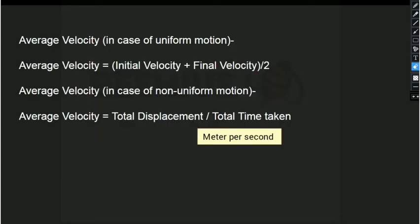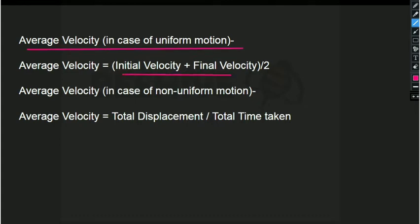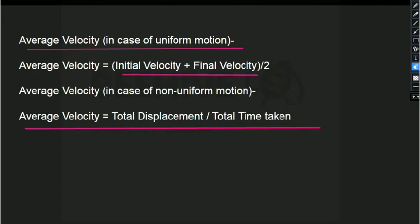For average velocity: in the case of uniform motion, average velocity equals initial velocity plus final velocity (u + v) divided by 2. In the case of non-uniform motion, average velocity equals total displacement divided by total time.